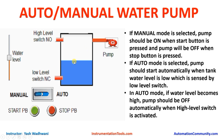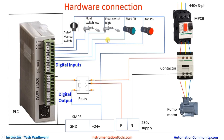If the user selects the switch to auto mode, the pump should turn ON and OFF based on the water level. If the water level goes below the low level switch, the switch will be activated and the pump will turn ON. It will remain ON until the water level rises to the high level switch, at which point the pump should turn OFF.